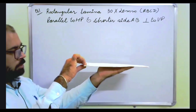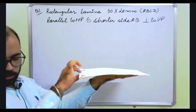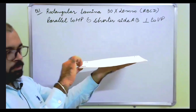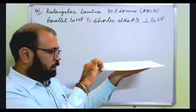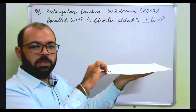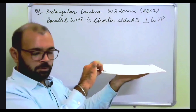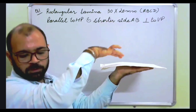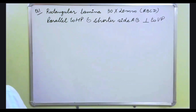Such that the shorter side AB is perpendicular to VP. Now, the rule we follow is that we always draw that view first in which we are able to see the actual shape of the plane or lamina. In this case, when it is parallel to HP and perpendicular to VP, we will be able to see the actual shape in the top view. So we will draw the top view first and then construct the front view from it.